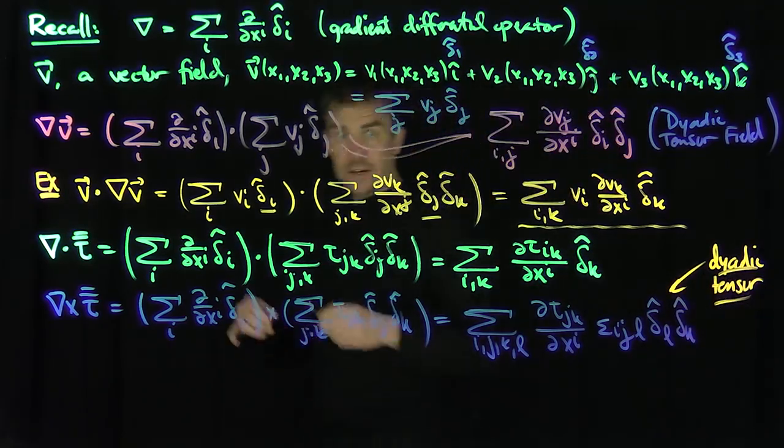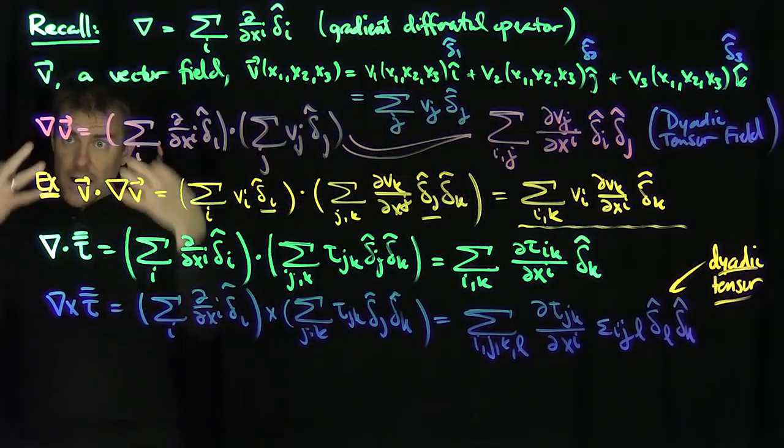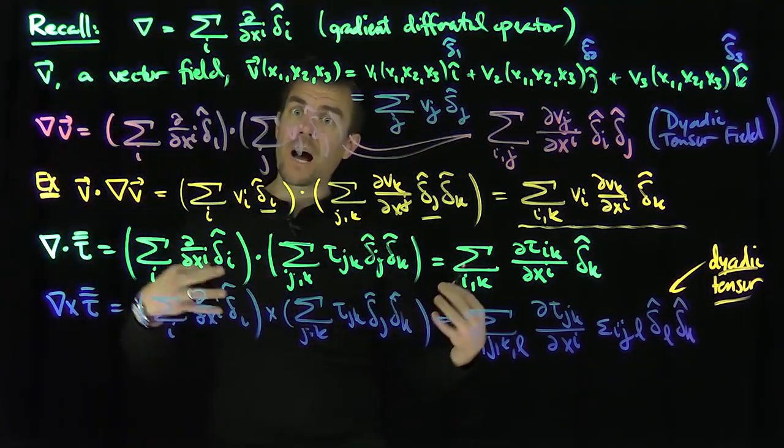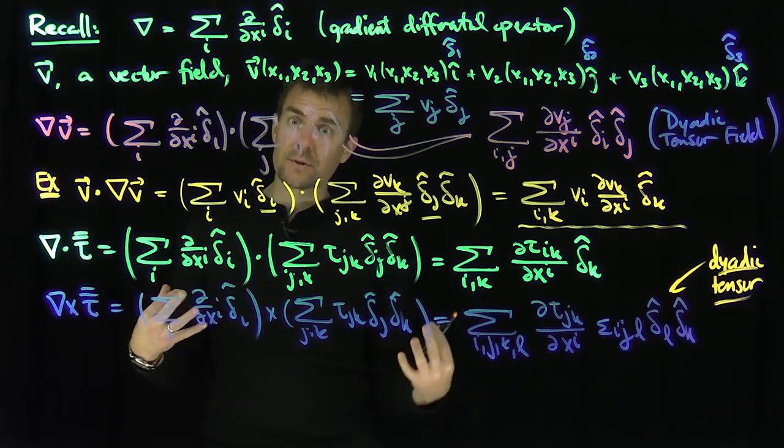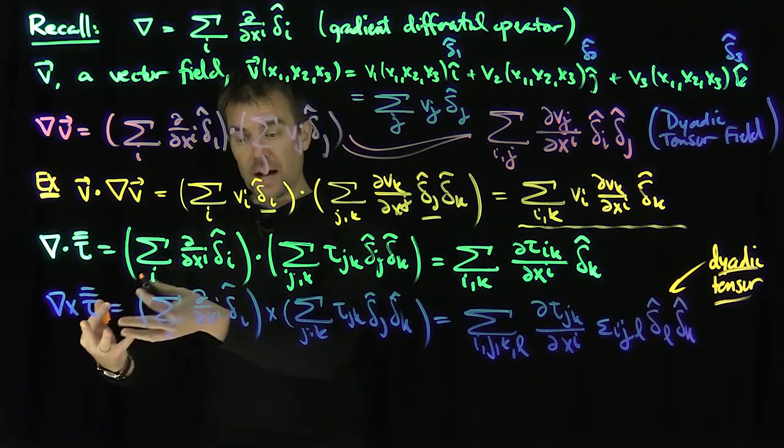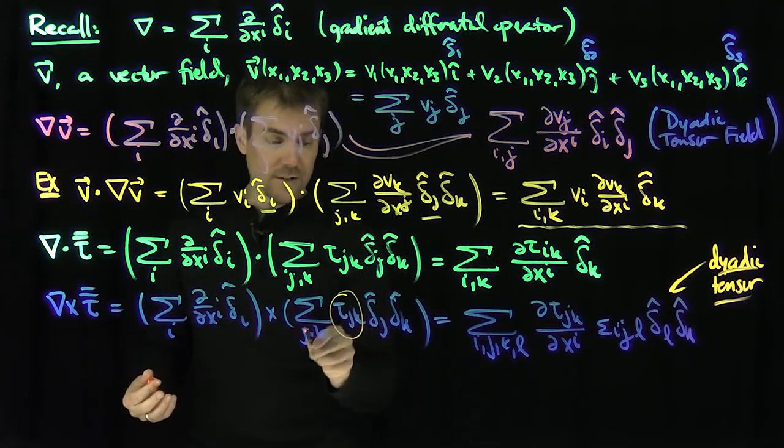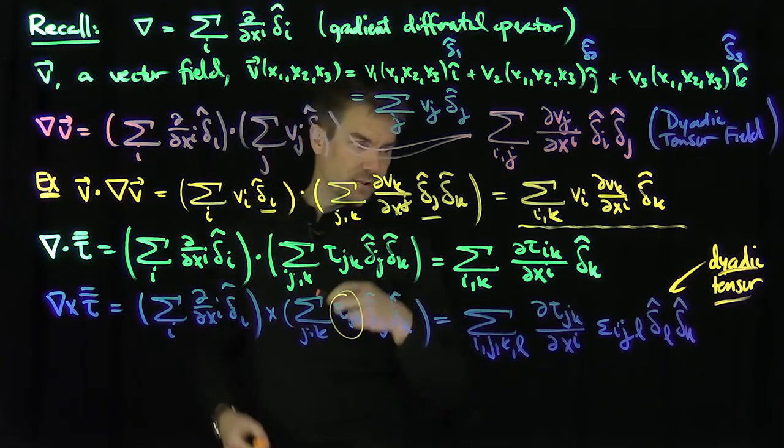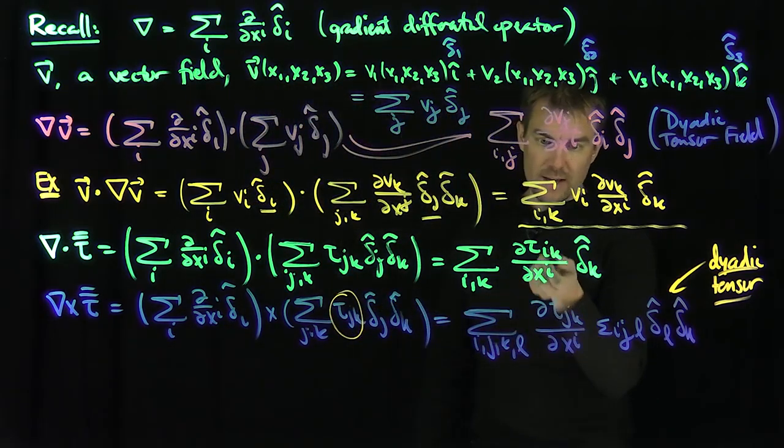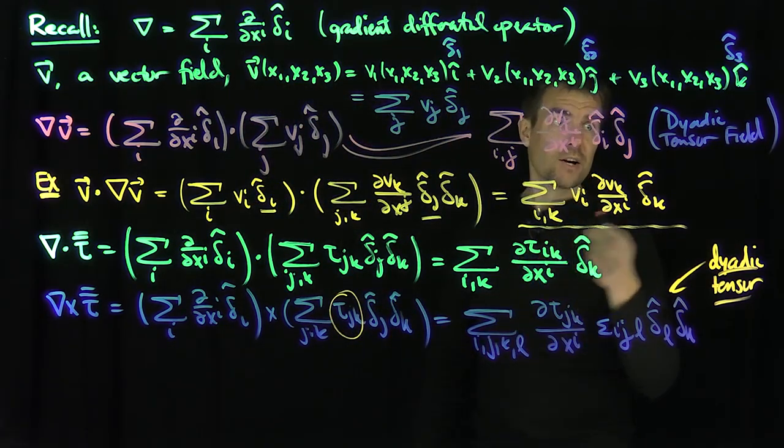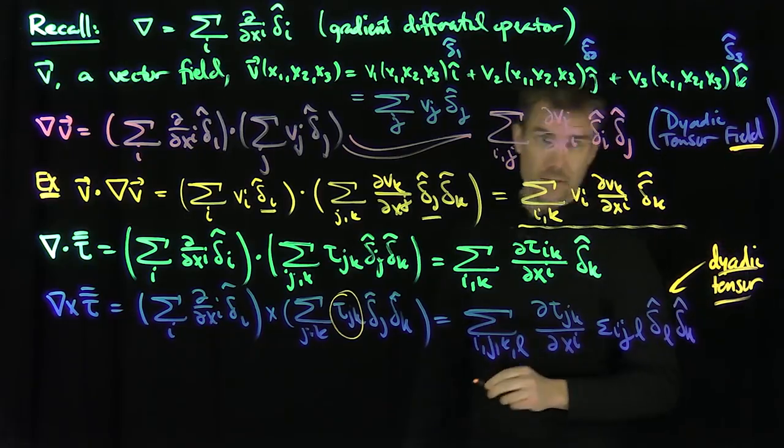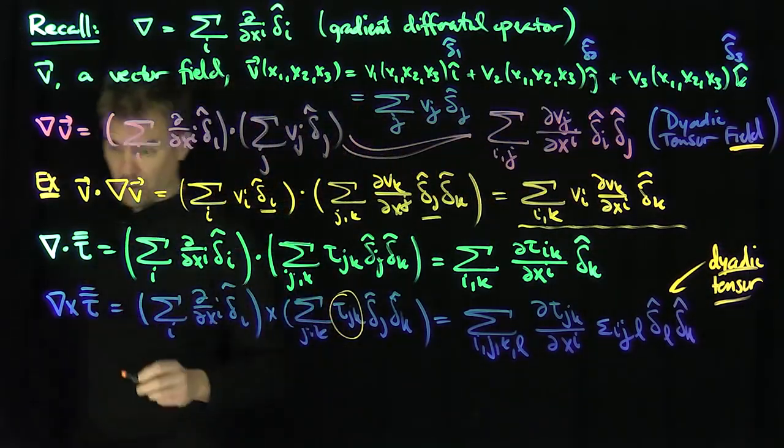I can extend these operators and keep getting higher dimensional things. This gives us a good sense of how we can incorporate our knowledge of dyadic tensors onto vector fields and dyadic tensor fields, because it's implicit that these tau jk or tau ik are not constant. They're functions of x, so these are dyadic tensor fields. A field means you depend on the coordinates.